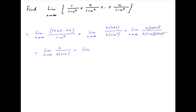Now divide both the numerator and the denominator by n. We get 1 upon 2 times (1 upon n minus 1), as n tends to infinity. When n tends to infinity, 1 upon n tends to 0, and therefore the given limit simplifies to 1 upon 2 times (minus 1), which is equal to minus one-half — the required answer.